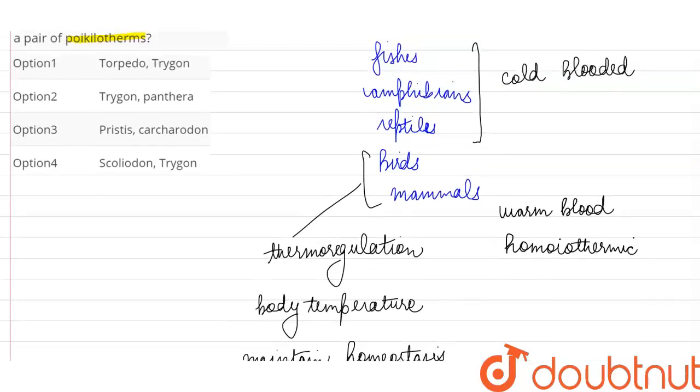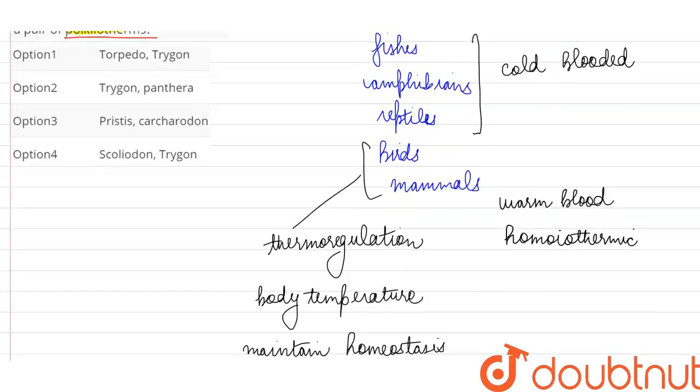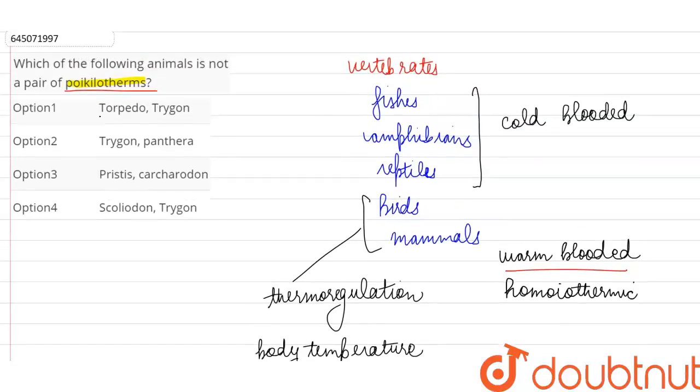So in this question, we have to select the organism where they are not poikilotherms. So in the option where we will find a warm-blooded animal, that will be our correct answer. So first they are saying Torpedo, Trygon.